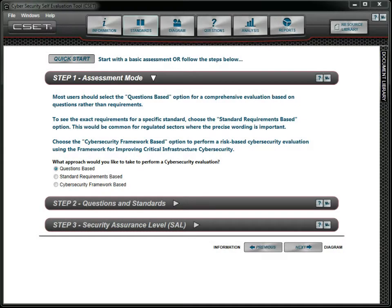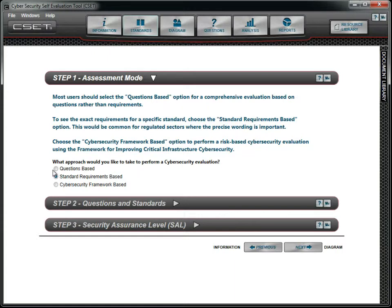One of the fundamental decisions to be made when performing a CSET assessment is which approach to take to evaluate your information and industrial control systems. To select the approach, simply click on the desired option.